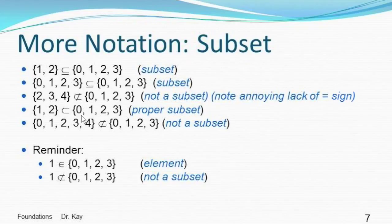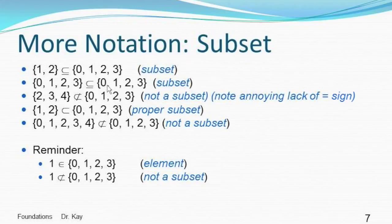A proper subset is a subset where the first set is a subset of the second and they are not equal. If we have the subset notation without the equal sign bar on the bottom, it means it's a proper subset. So {0, 1, 2, 3} is not a proper subset of itself, but {1, 2} is a proper subset of {0, 1, 2, 3}. And {0, 1, 2, 3, 4} is not a subset of {0, 1, 2, 3}.